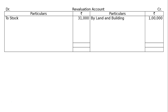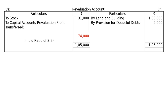Provision for doubtful debts is to be made equal to 5% of debtors. Debtors are Rs. 1,00,000; 5% of this is Rs. 5,000. But the provision for doubtful debts already appearing in the books is Rs. 10,000, hence it will be reduced to Rs. 5,000 — debit provision for doubtful debts Rs. 5,000. Credit side totals Rs. 1,05,000; debit side Rs. 31,000; profit is Rs. 74,000.